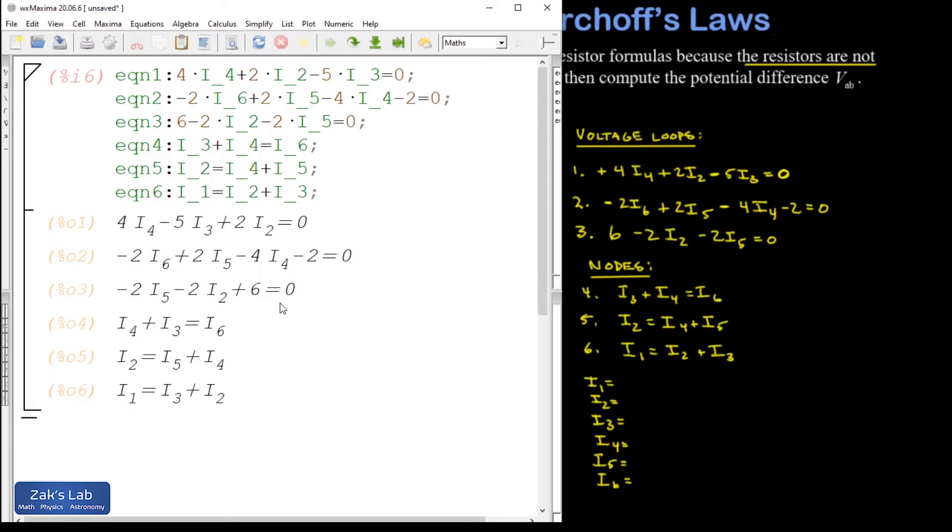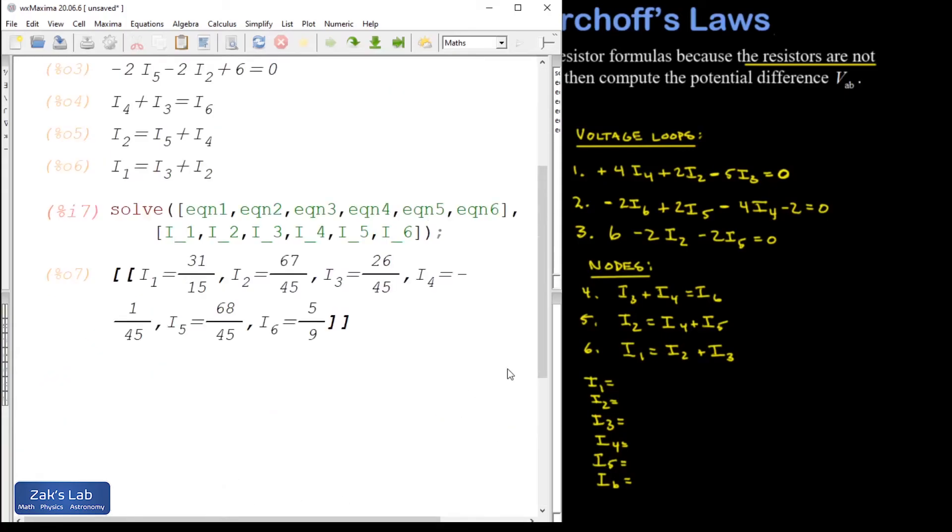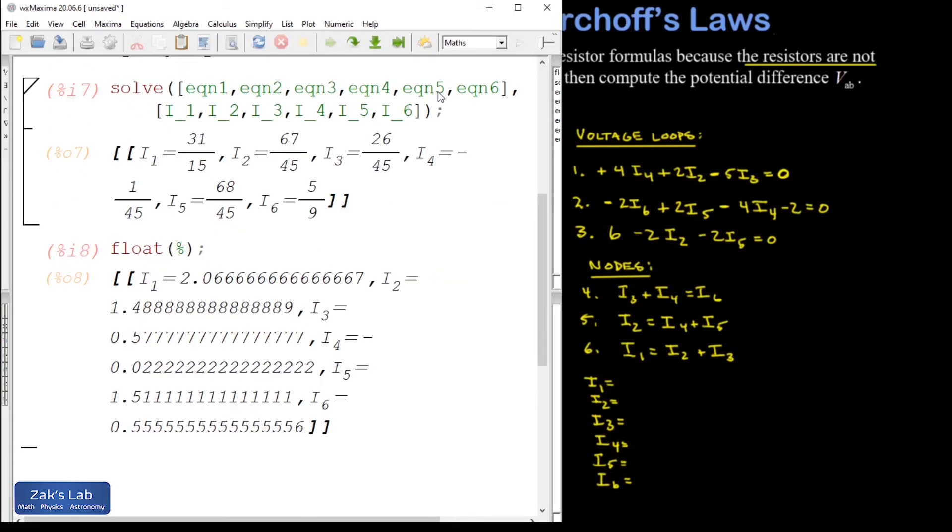Everything looks good to me, so now I'm going to solve the system. So there's the syntax. You solve your set of equations for your set of variables. Hit Shift-Enter. And notice that Maxima spits out exact fractional solutions for these. I'm not really interested in that. I'd rather have decimal approximations. So I'm going to ask Maxima to round the prior result. And now I've got my decimal approximations.